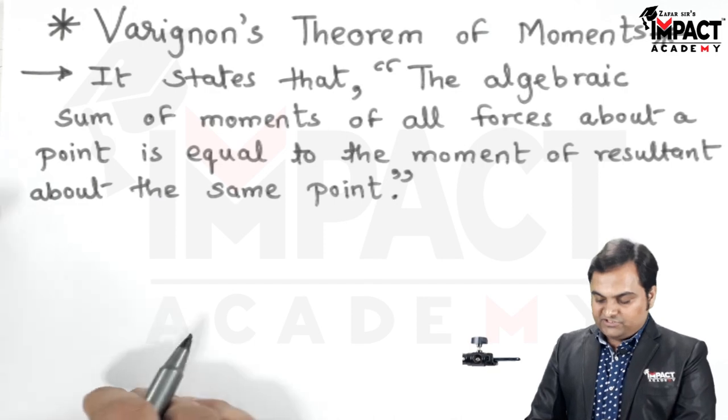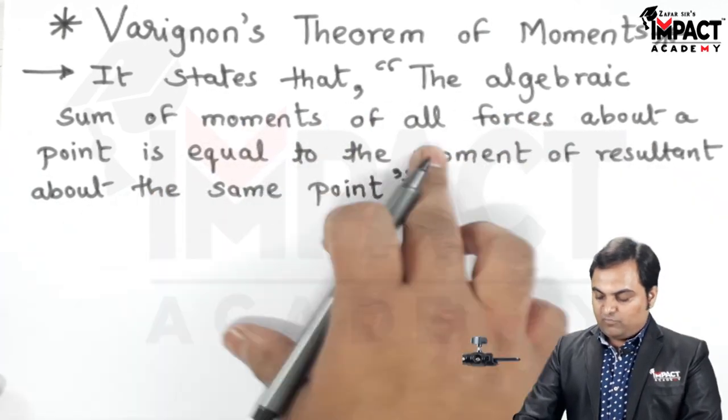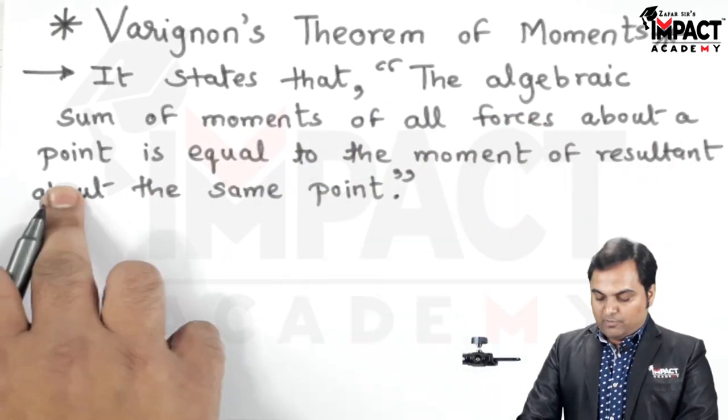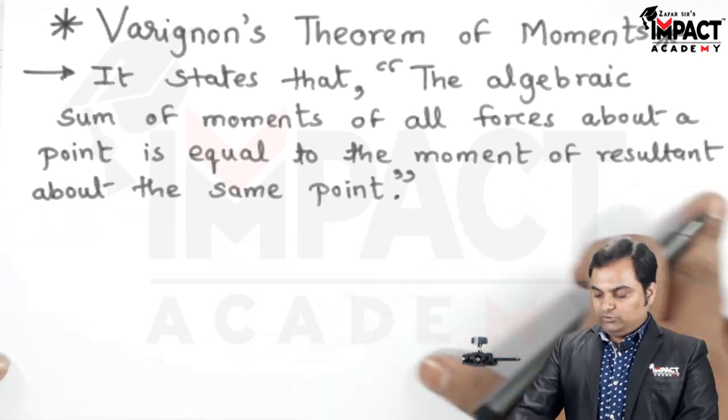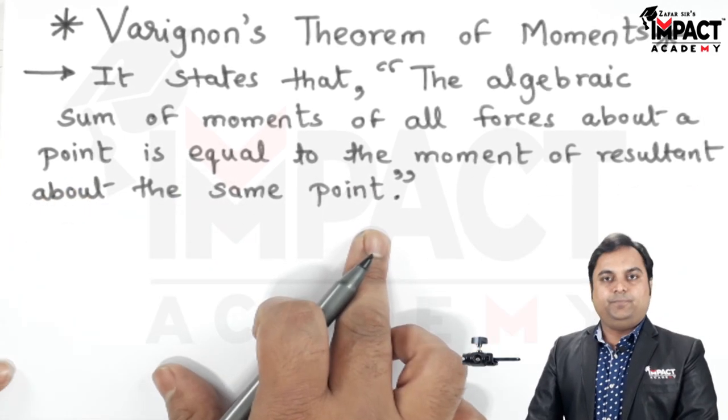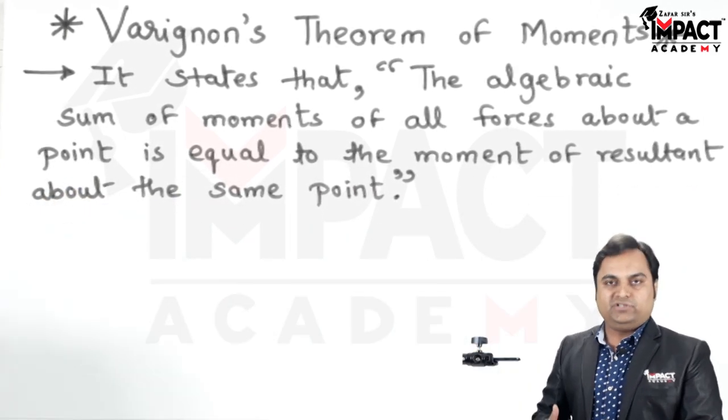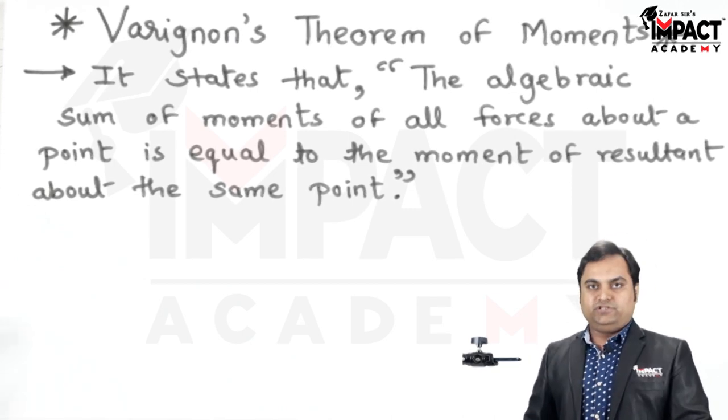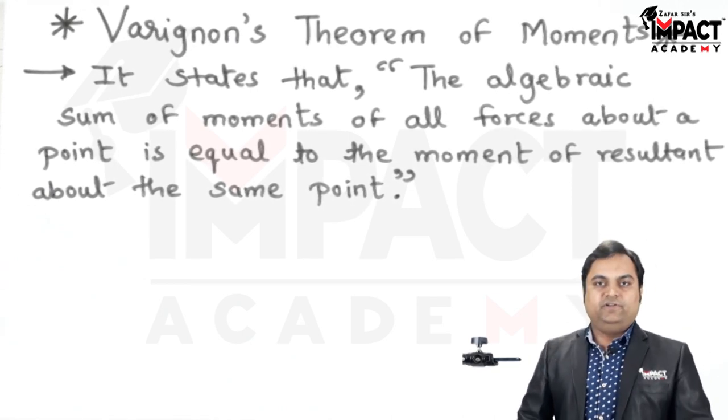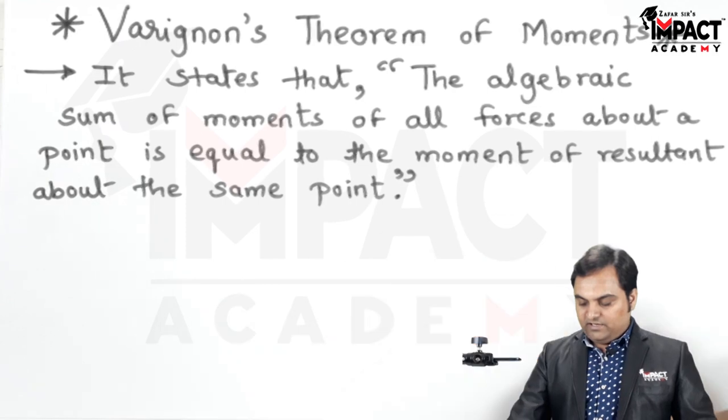Varignon's theorem of moments states that the algebraic sum of moments of all the forces about a point is equal to the moment of resultant about the same point, and this is mostly used in case of non-concurrent forces in order to find the location of resultant. I will be explaining this with the help of a diagram here.